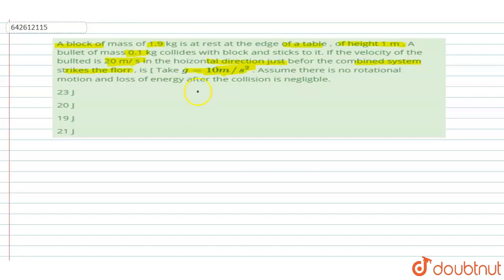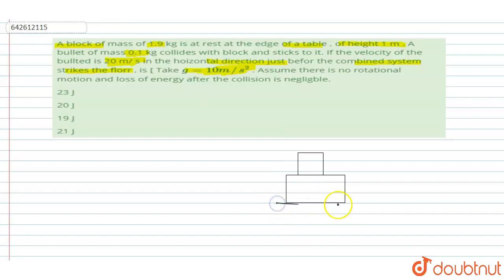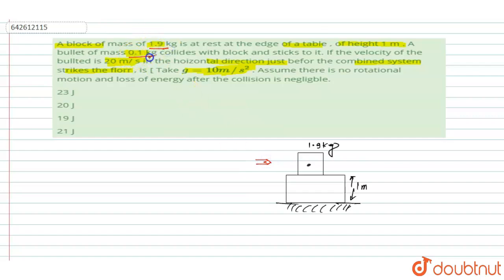We have to find the kinetic energy at the ground. First, let's draw the figure. The block has a mass of 1.9 kg and is at a height of 1 meter. The bullet has a mass of 0.1 kg and a velocity u equal to 20 meters per second.